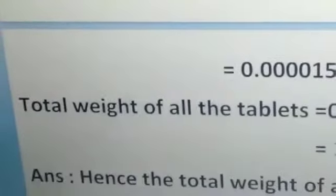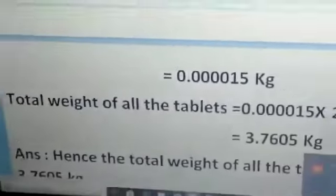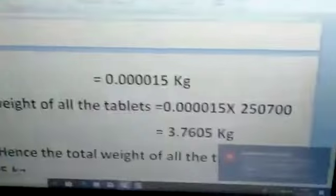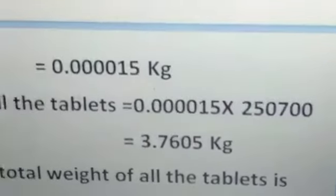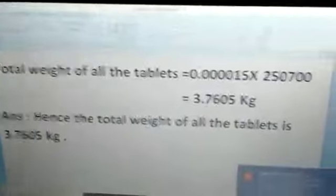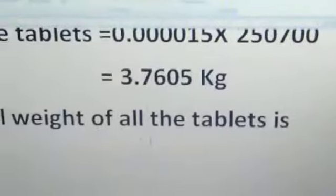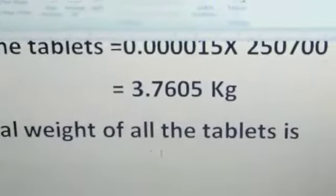But they are asking the total weight of all the tablets. So how many tablets were there? 2,50,700 multiplied by weight of each tablet will give you the total weight of all the tablets. Hence the total after multiplication, the total weight of all the tablets is 3.7605 kilogram.